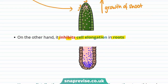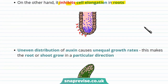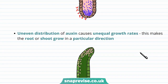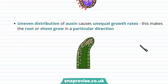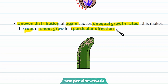Auxin also inhibits cell elongation in the roots, so auxin causes these cells to decrease in size. Growing towards or away from stimuli, such as light, depends on the distribution of auxin. Uneven distribution of auxin causes unequal growth rates, which makes the root or shoot grow in a particular direction.